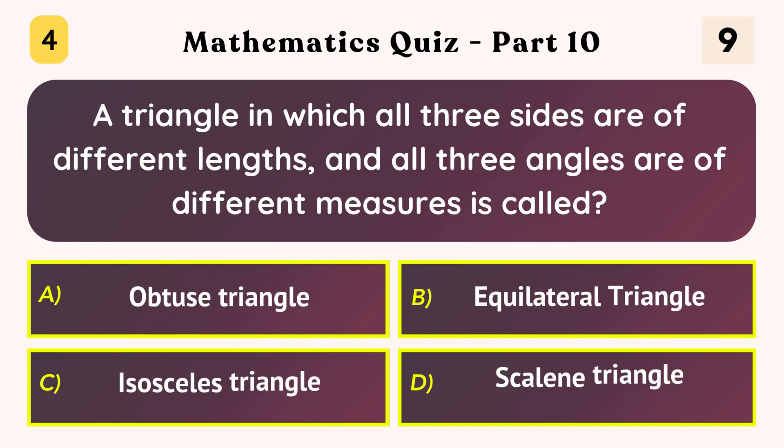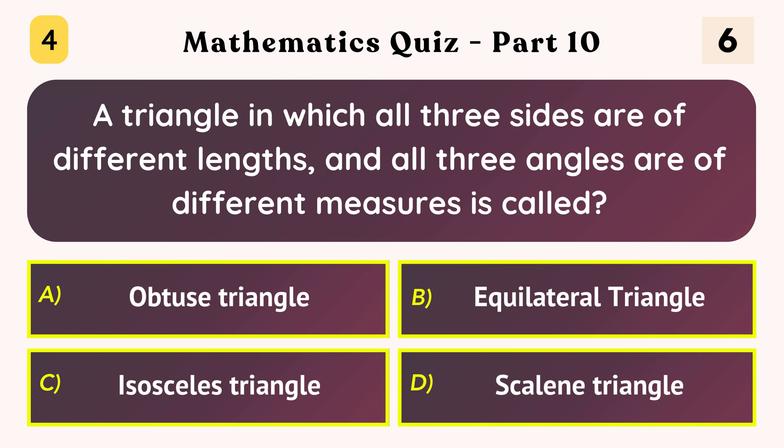A triangle in which all three sides are of different lengths and all three angles are of different measures is called? Scalene triangle.